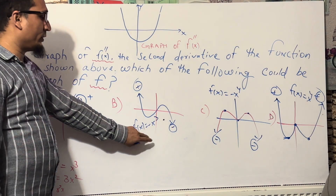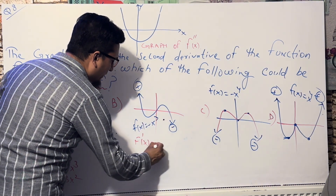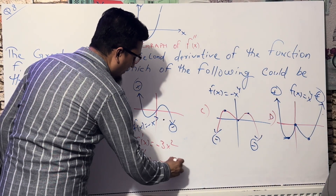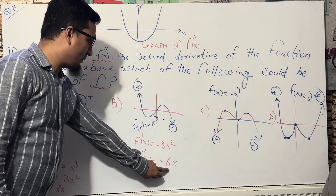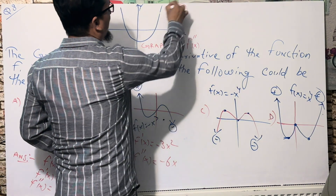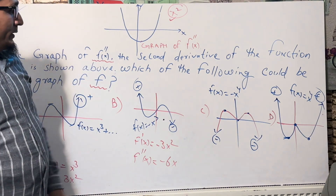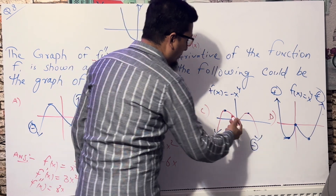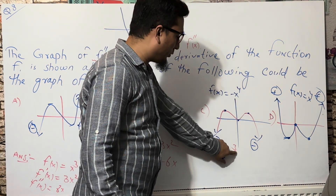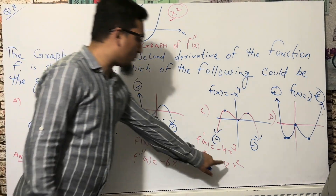Similarly, if F'(x) = -3x², then the double derivative is -6x, also linear. Now the given graph of the double derivative shows a quadratic shape - one turning point - which means it is the graph of something like x². For option C with minus x⁴, the first derivative is -4x³, and the double derivative would be -12x², or -2x² - a downward parabola.